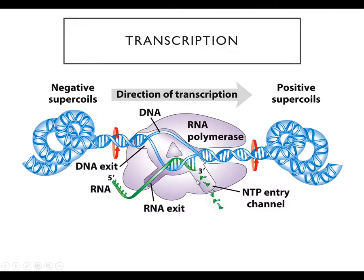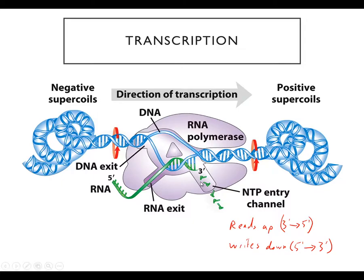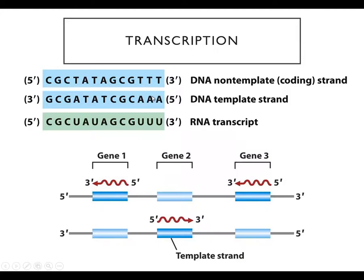RNA polymerase reads from three prime to five prime with respect to the template strand, and it writes — meaning it creates the new strand — in the five prime to three prime direction. The strand that RNA polymerase is actually reading is called the DNA template strand, and the other one is the non-template strand.